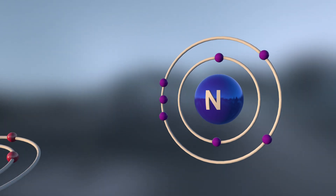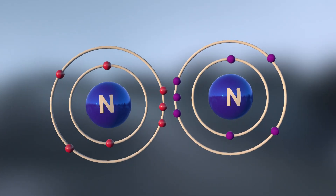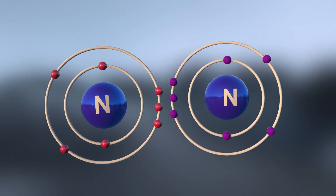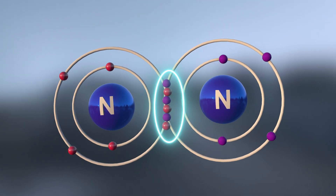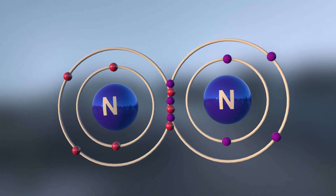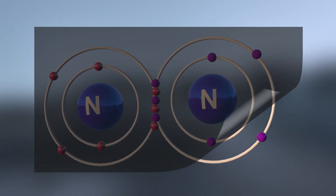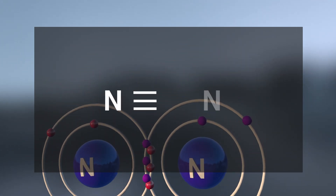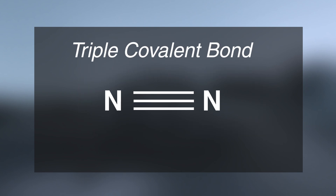Nitrogen needs three electrons to complete its octet. When two atoms of nitrogen react with each other, both the atoms share their three electrons and get stable. Since three electrons are being shared, the bond formed is a triple covalent bond. It is represented by a triple line.